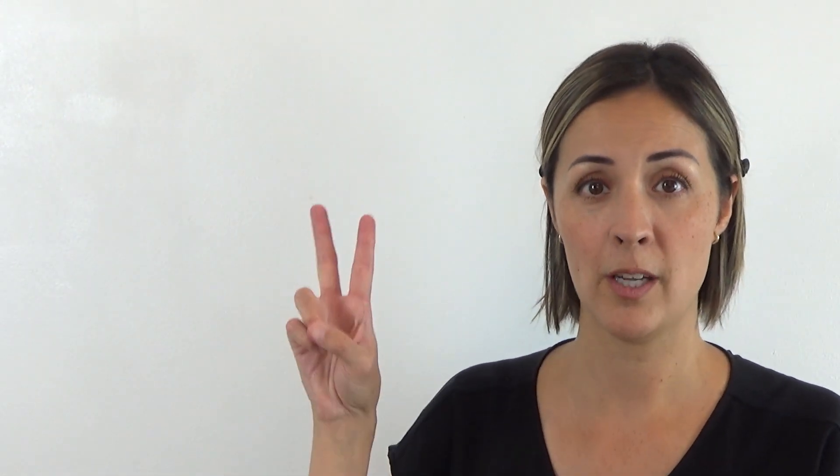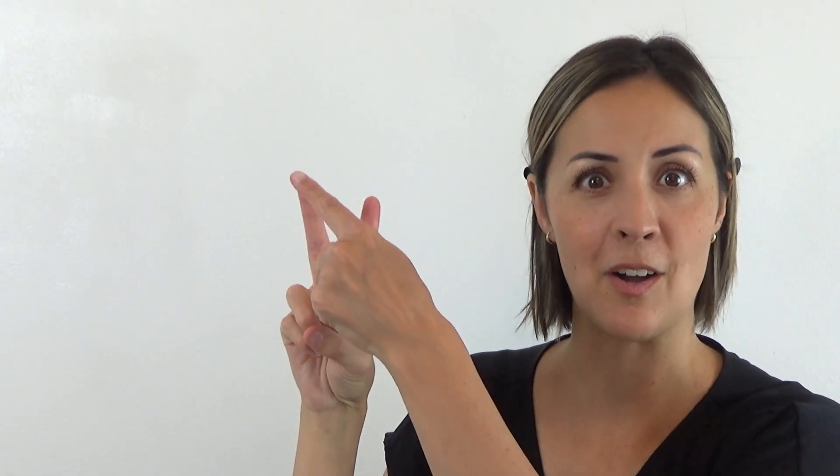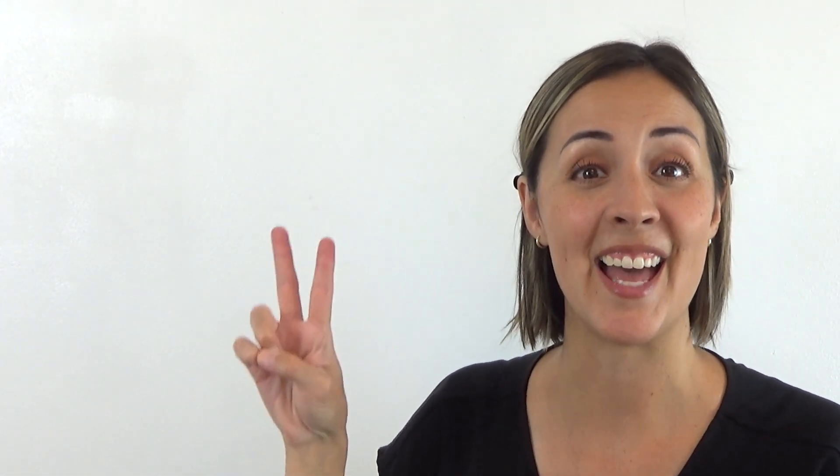So the sign language for letter V is super simple. All you do is take two fingers, hold them straight in the air. Don't let them touch. Keep them apart. And that's called letter V because it looks like a V. Can you say letter V? Ready? It's a letter V. You got it. Keep your letter V.